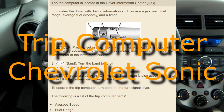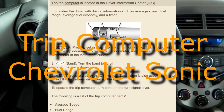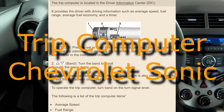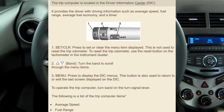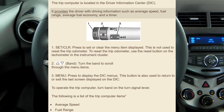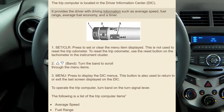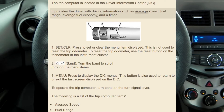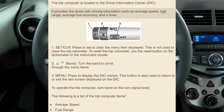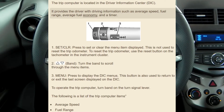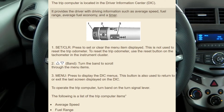Trip Computer. The Trip Computer is located in the Driver Information Center. It provides the driver with driving information such as average speed, fuel range, average fuel economy, and a timer.